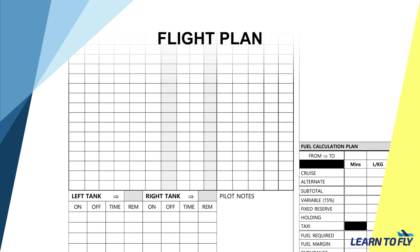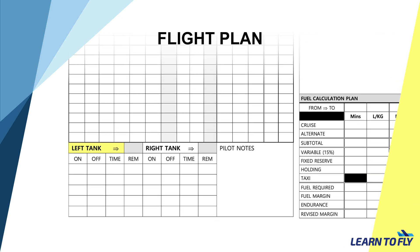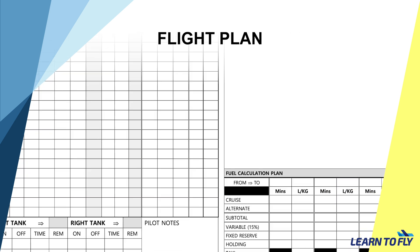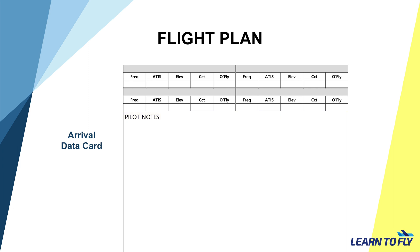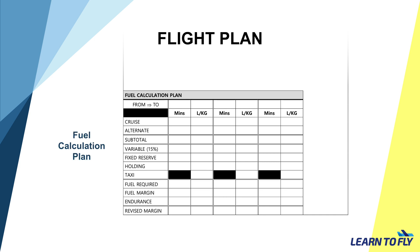Close to the bottom of the flight plan sheet is the fuel log section, which shows how much fuel in minutes is in the left and right tank. On the right side of the flight plan sheet is the arrival data card, which has space to fill in different details of the airport we'll be visiting, such as the frequency, ATIS frequency, elevation, circuit height, and overfly height. There is also space to draw the airport layout if preferred, and at the bottom is the fuel calculation plan, which we'll be covering in a later part of the series.